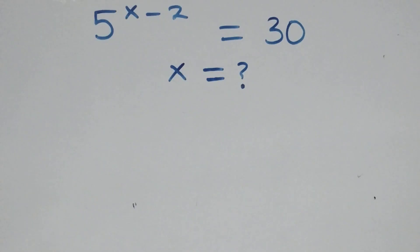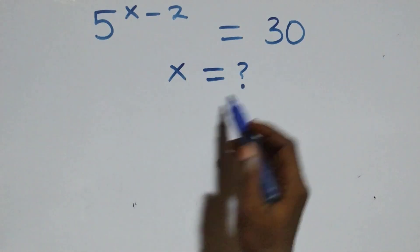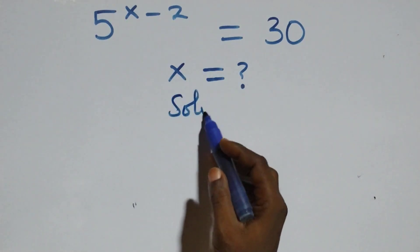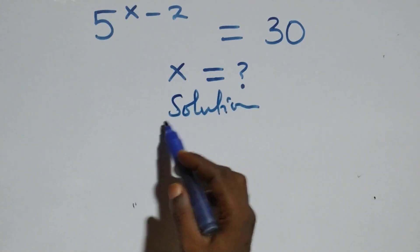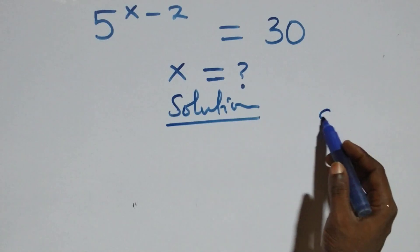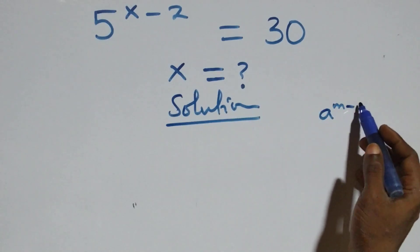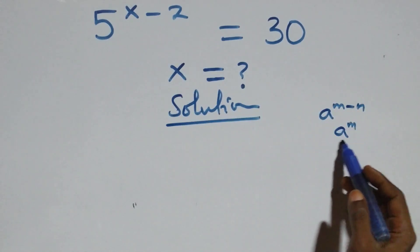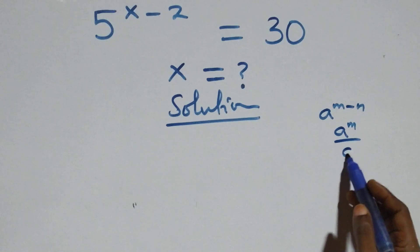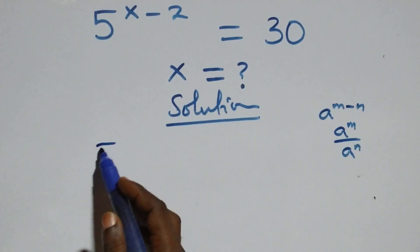Hello, you're welcome. Here we solve a nice exponential equation. This follows from the rule: a raised to power m minus n is the same thing as a raised to power m over a raised to power n.